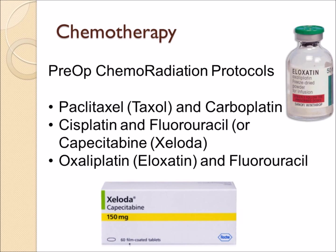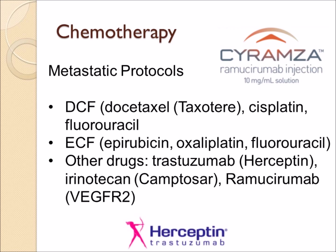There are standard protocols for preoperative chemoradiation. Carboplatin and taxol — so-called carbotaxol — is probably the most common chemotherapy regimen combined with radiation preoperatively. For patients with metastatic disease, three-drug regimens are generally offered. There are now molecularly targeted drugs becoming increasingly available, such as Herceptin and Ramucirumab. It seems likely that more molecularly targeted drugs, or biologicals, will be available in the future as in other cancers.